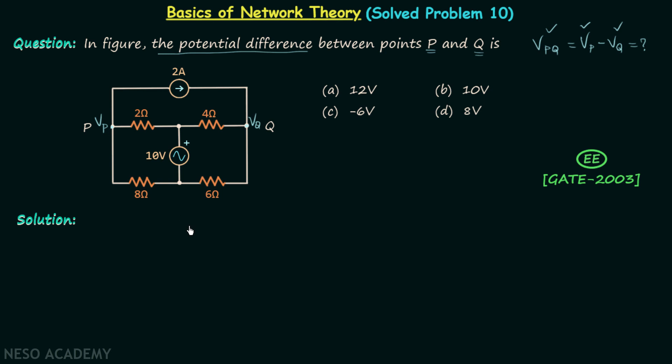We know in nodal analysis the first thing we do is to find out how many principal nodes are there in the network. In this network we have 1, 2, 3 and 4 principal nodes and I will select the bottom node as the reference node.